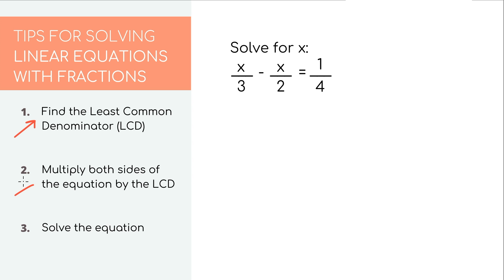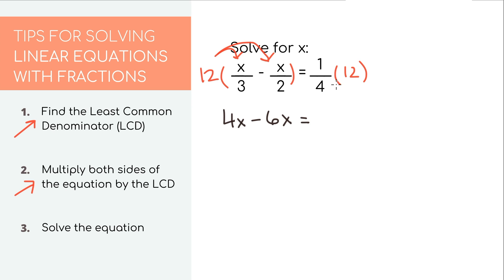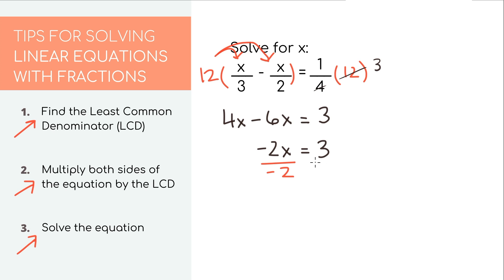Once you've found the LCD, multiply both sides of the equation by 12. On the left side, distribute the 12: 12 times X over 2 equals 6X, and we also have terms involving thirds and fourths. On the right side, 12 times 1 over 4 equals 3. Now we have a normal linear equation. Simplifying the left side: 4 minus 6X equals negative 2. Bringing down the 3, in order to fully isolate X, we need to get rid of the negative 2. Since it's negative 2 times X, divide both sides by negative 2. We get X equals negative 3 over 2, which is our final answer.